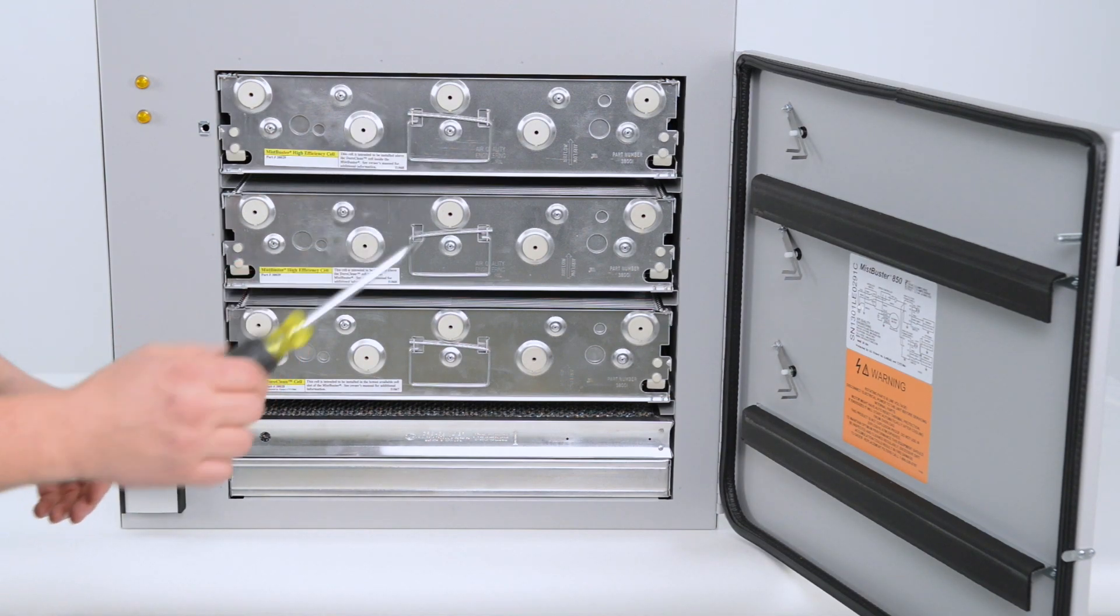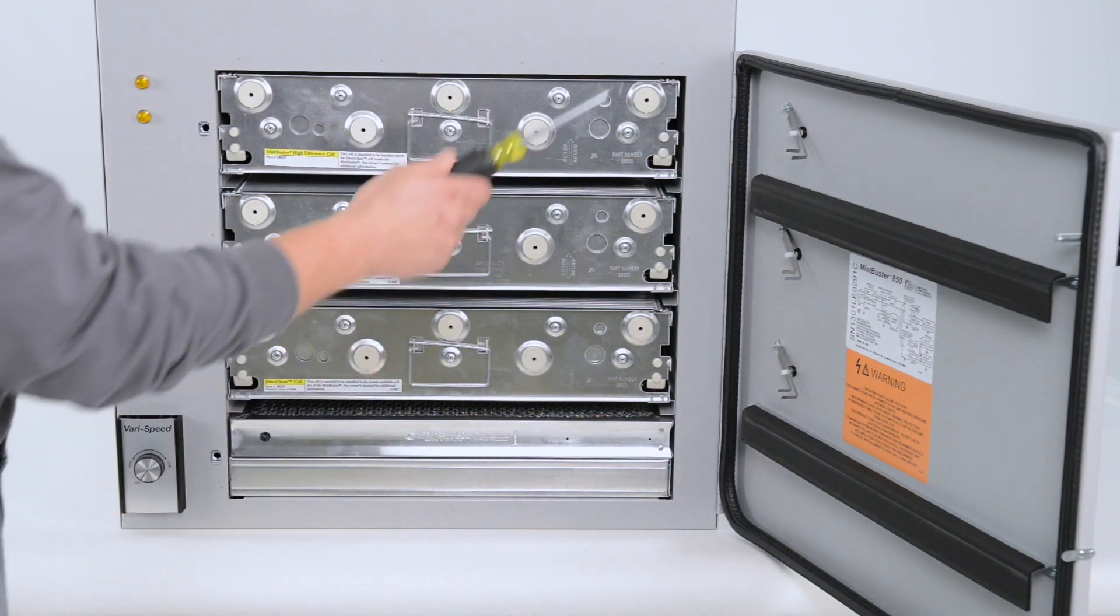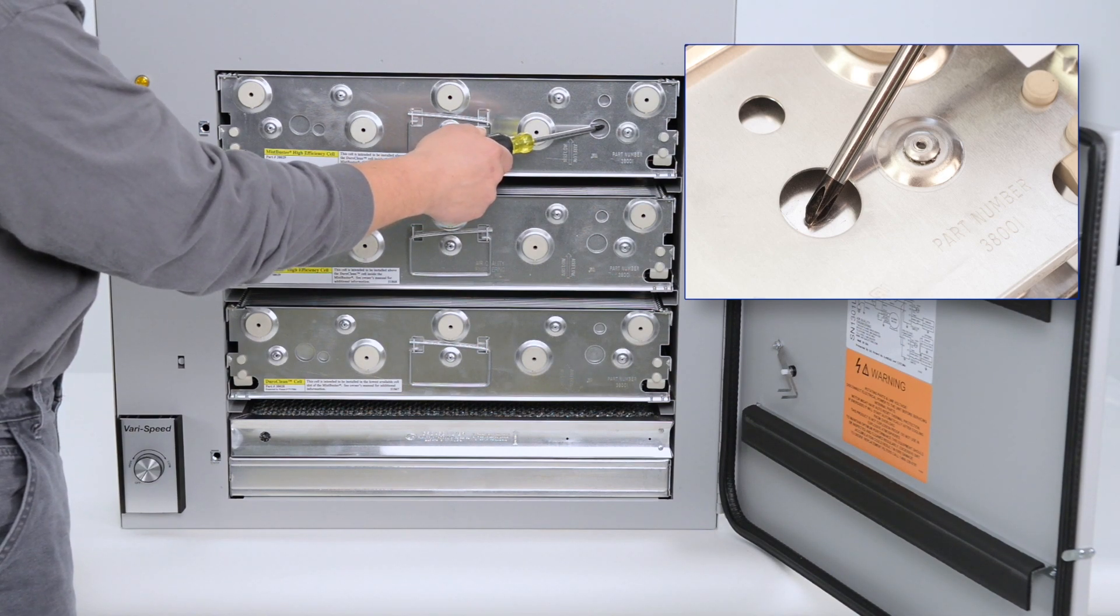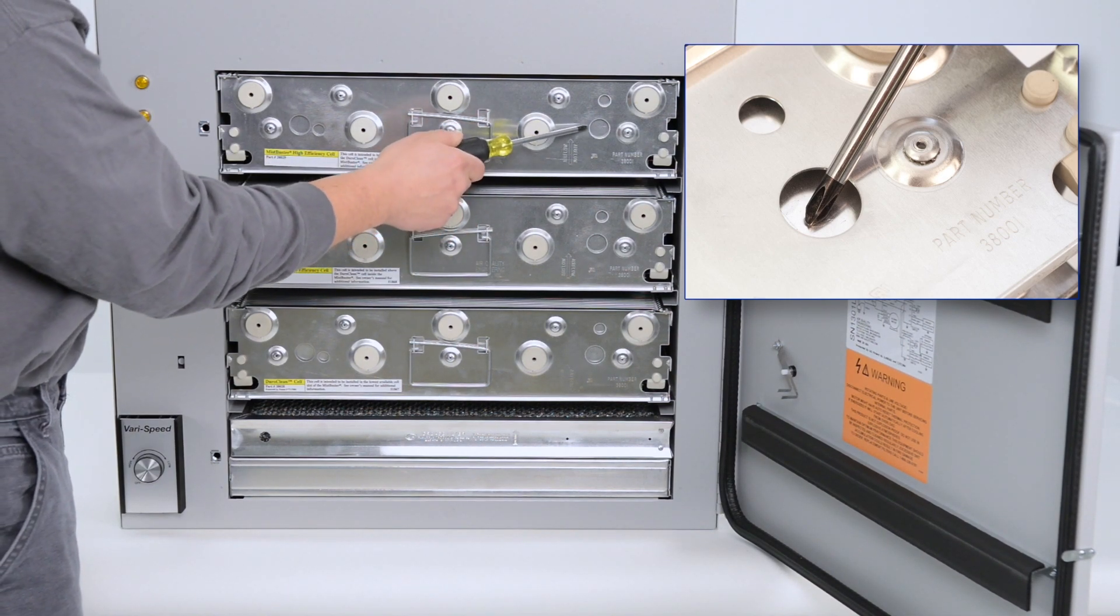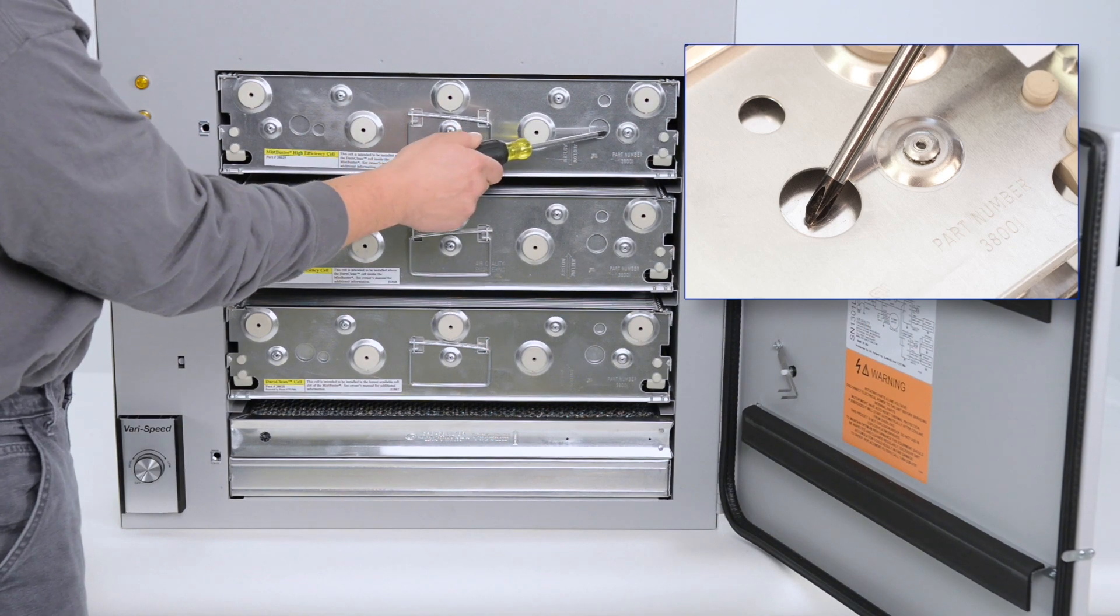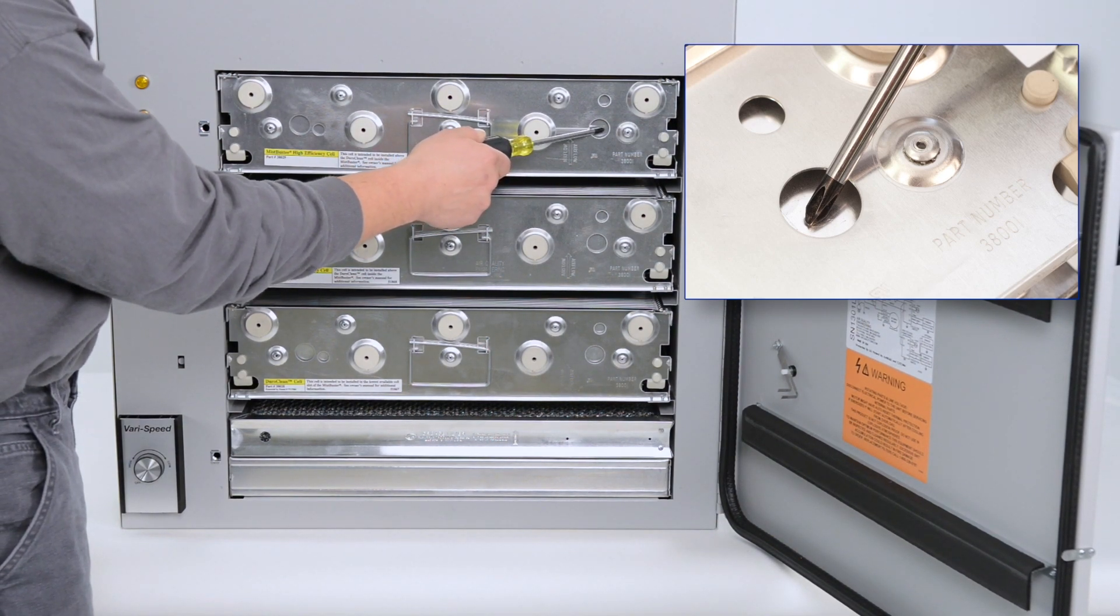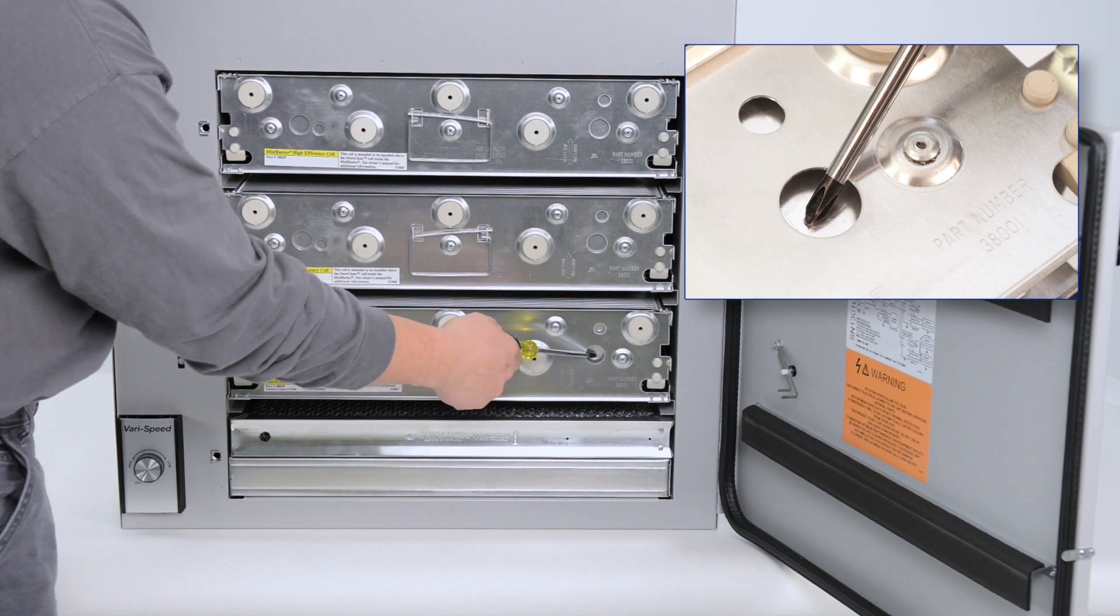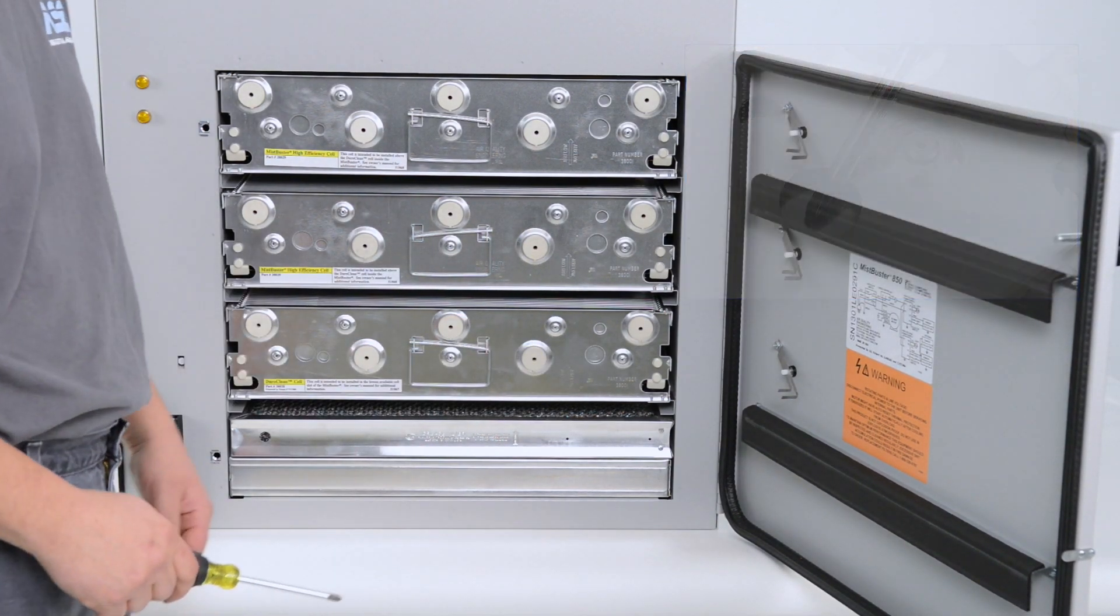Next, using an insulated screwdriver, touch the tip of the screwdriver to the base of the collection cell and also touch the first collection plate. This is a safety measure just to ensure that the cells are actually grounded before you touch them.